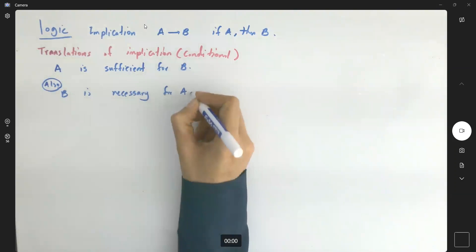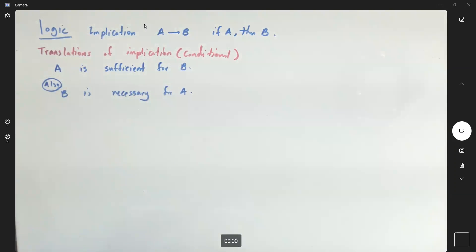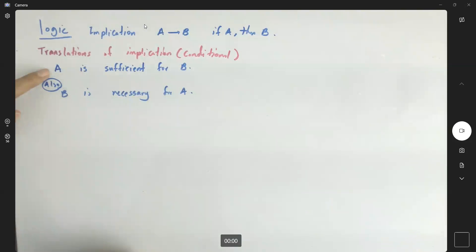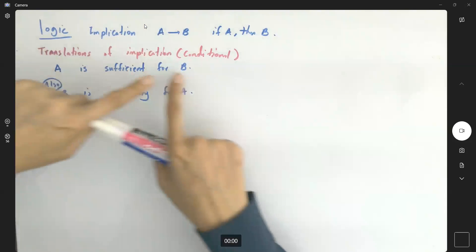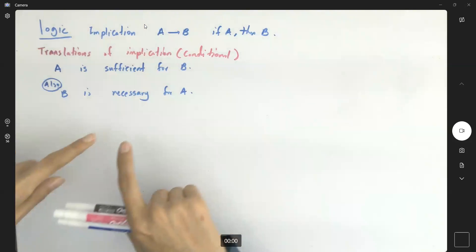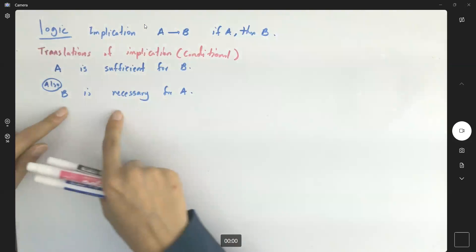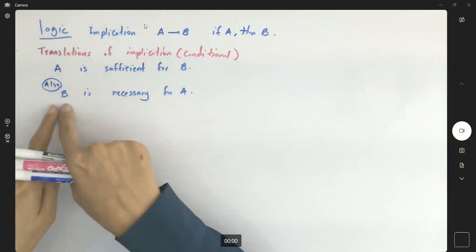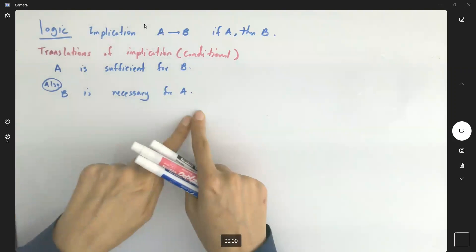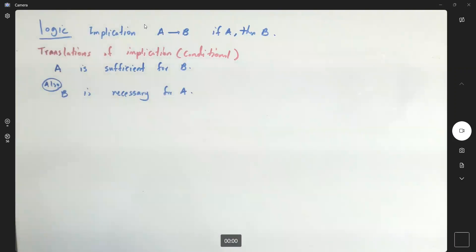These are two other translations of implication or the conditional statement. So in the homework, in the exam, in the group activity — if you see a statement 'a is sufficient for b,' the meaning is a implies b. If you see 'b is necessary for a,' it also means that a implies b, i.e., a then b.